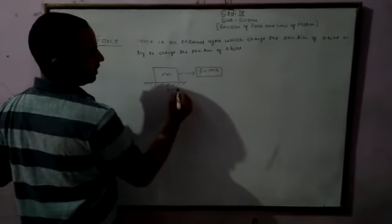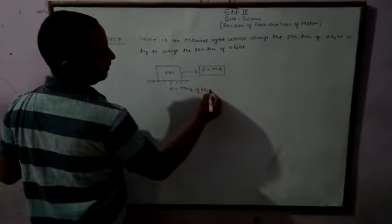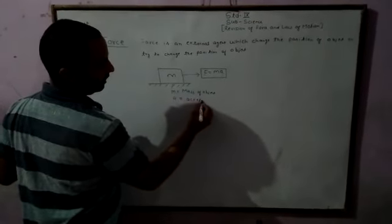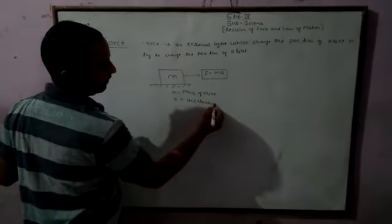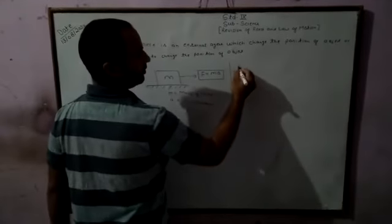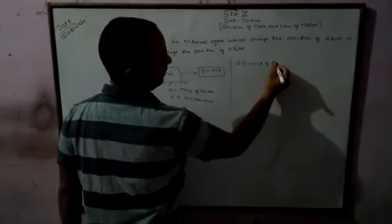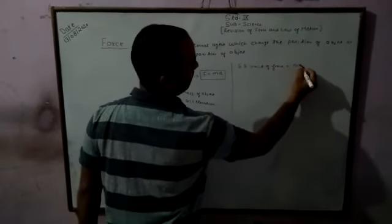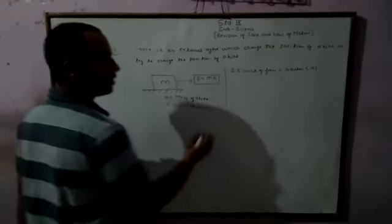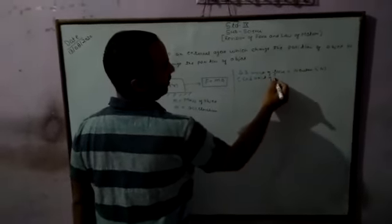What is the SI unit? The SI unit of force is newton. And what is the CGS unit of force? CGS unit of force.